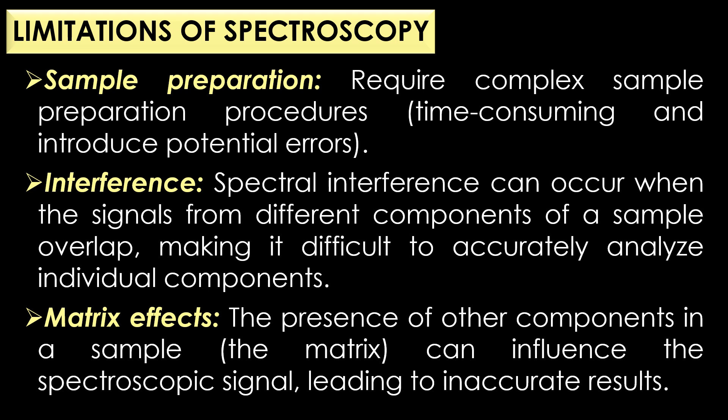The second limitation is spectral interference, which can occur when the signals from different components of a sample overlap, making it difficult to accurately analyze individual components. The third limitation is matrix effects — the presence of other components in the sample can influence the spectroscopic signal, leading to inaccurate results.